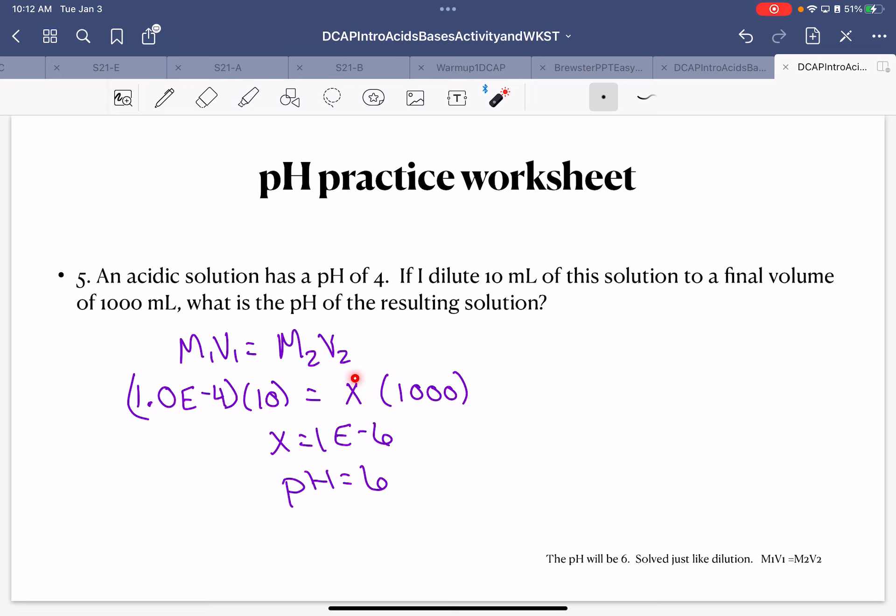Hopefully you remember that if I have a pH of 4, that my number is 1.0 E to negative 4. I put that value of 10 in there equals X times a thousand. When you do this, you're going to get X equals 1 E to negative 6. My pH is 6.